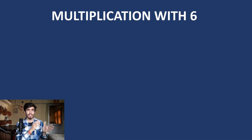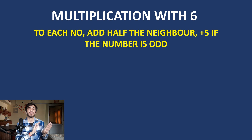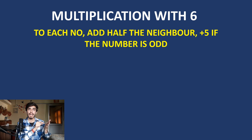Let's quickly look at other numbers and their keys. For multiplication by 6, the key is: to each number, add half of its neighbor and add 5 if the number is odd. It is similar to the key for 5, just with the addition of the current number itself.